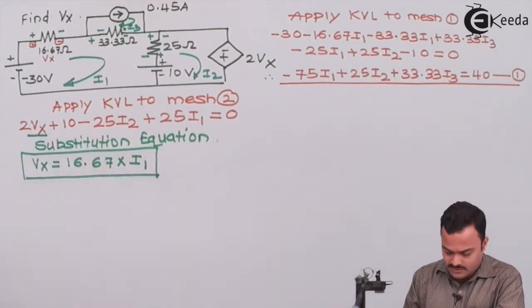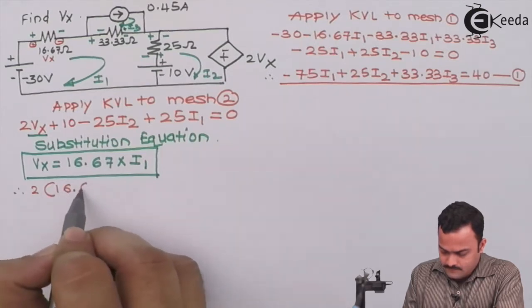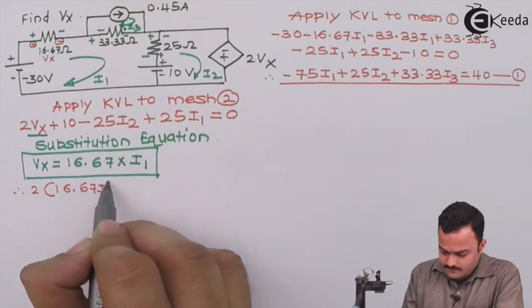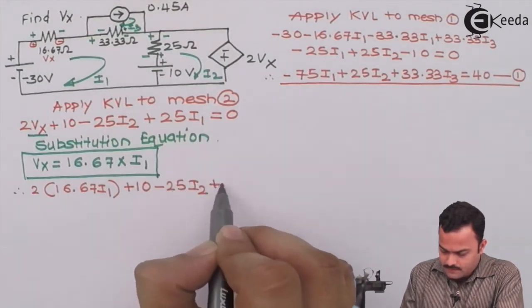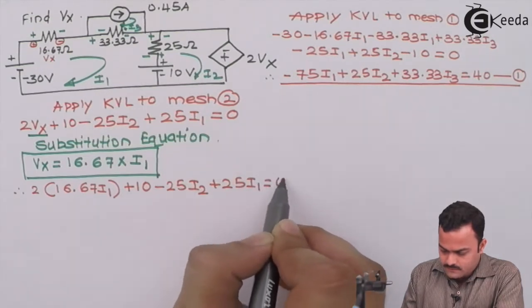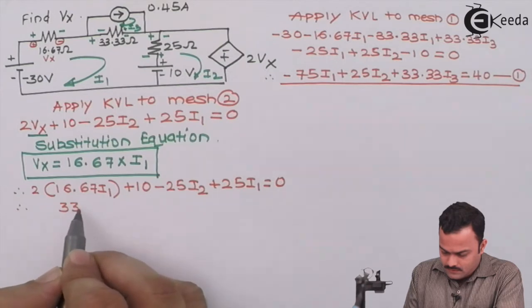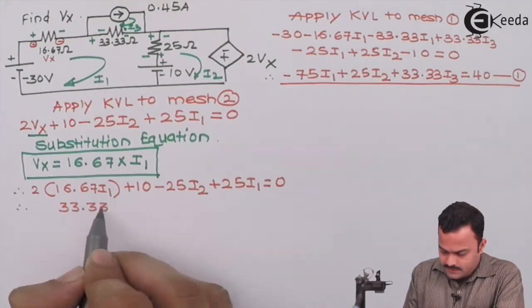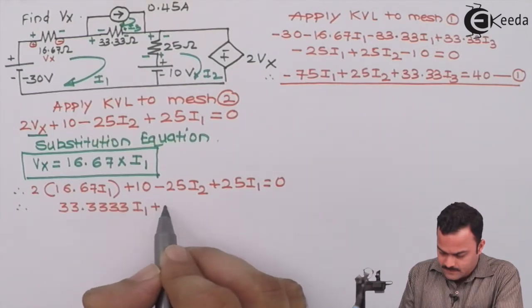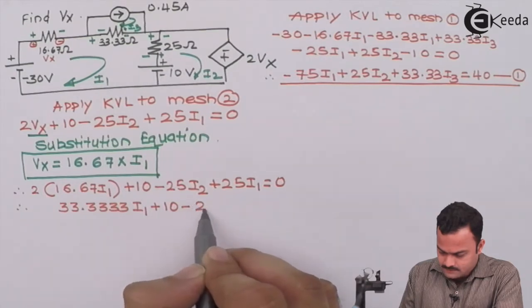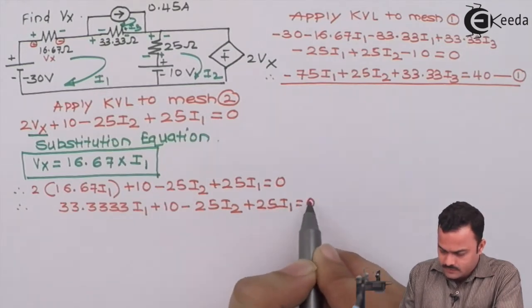For vx we can substitute over here to simplify the equation. So we'll have 2 times 16.67i1 plus 10 minus 25i2 plus 25i1 equal to zero. So this becomes 33.33i1 plus 10 minus 25i2 plus 25i1 equal to 0.